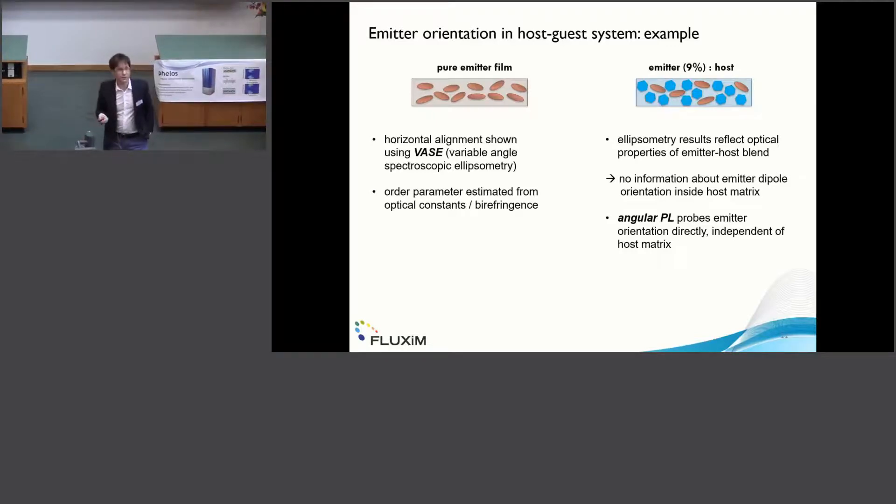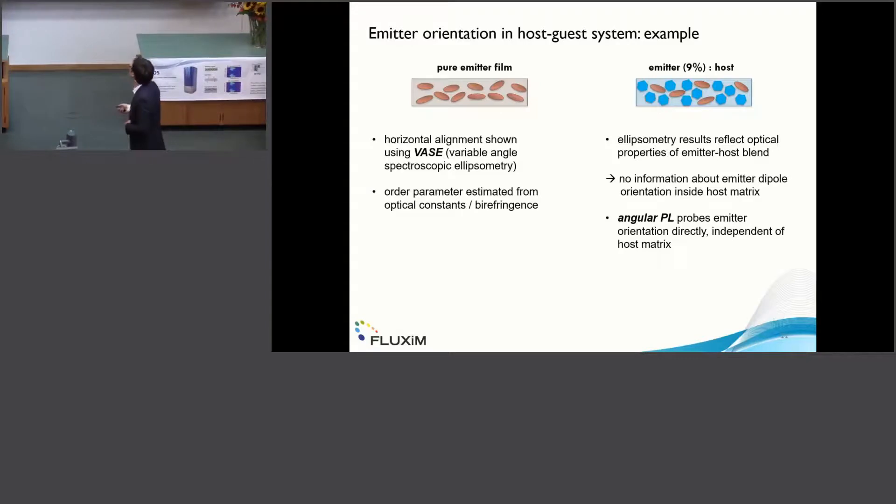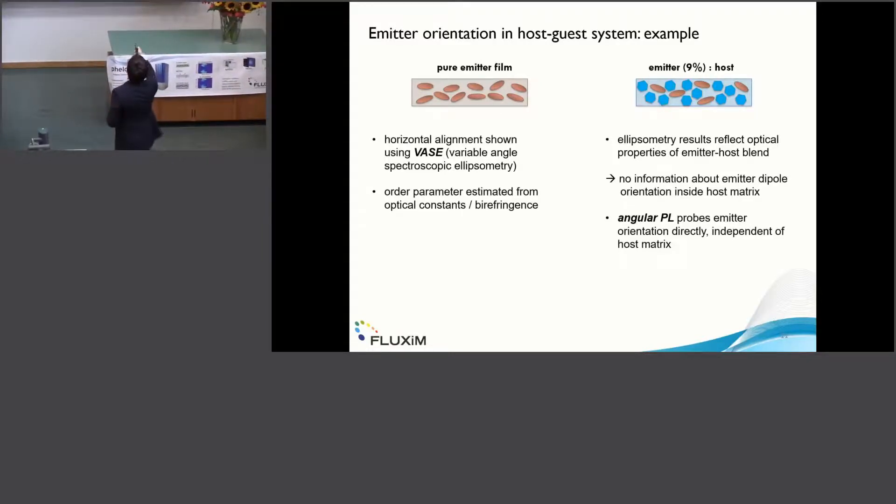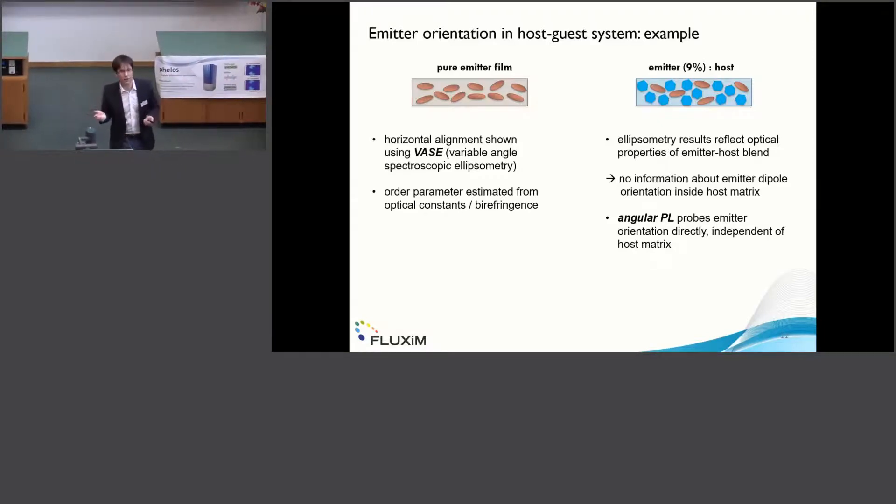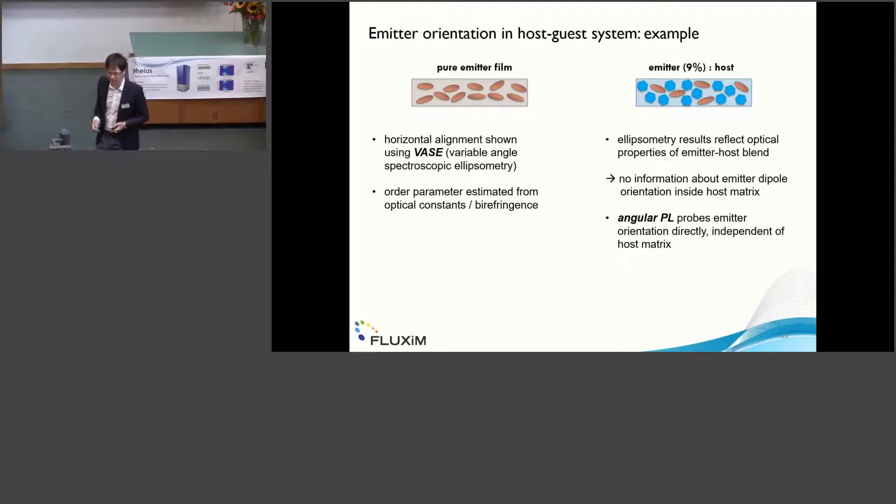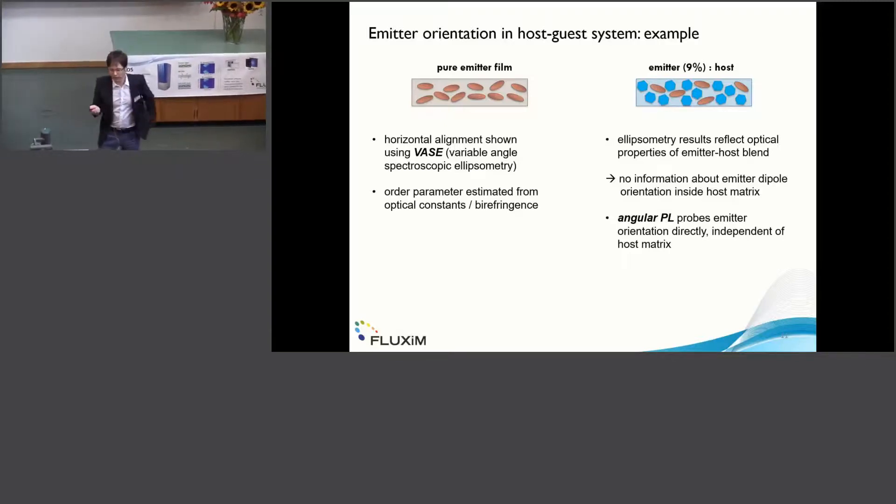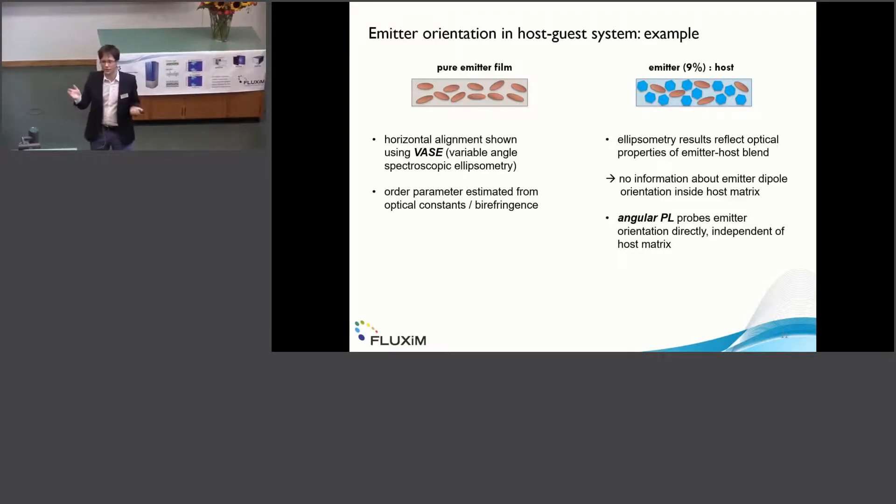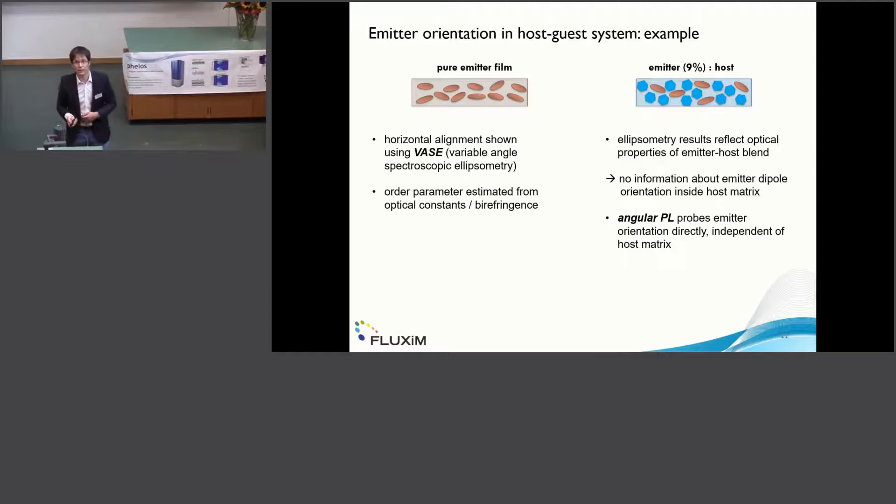I would like to show you some examples that we measured for one of our customers. We got two samples: a pure emitter film on the left-hand side, and an emitter host system with 9% emitting molecules. Our customer had already characterized the pure emitter film with angular ellipsometry. They could find the optical constants and see some birefringence, and from this birefringence they could at least estimate the average orientation of the dipoles. They sent us the blend sample, because from ellipsometry they could not measure the optical properties of the emitter alone in the blend system, since you just measure some average optical properties of the emitter host system. Therefore we tried to back-extract the dipole orientation in this case as well with the angular PL.